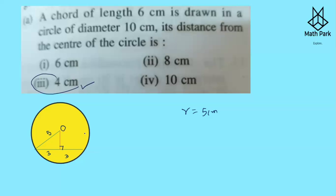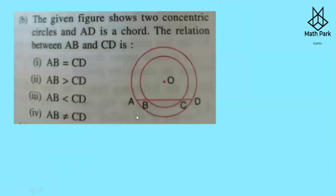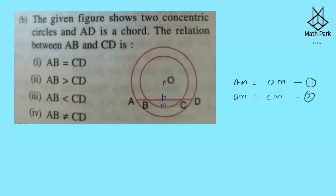Question 2 shows two concentric circles where AD is a chord. We drop a perpendicular from the center, which bisects the chord. Taking chord AM: AM = DM (equation 1). Taking chord BC: BM = CM (equation 2). Subtracting equation 2 from equation 1, AM minus BM gives AB, and DM minus CM gives CD. Therefore AB = CD is the correct option.